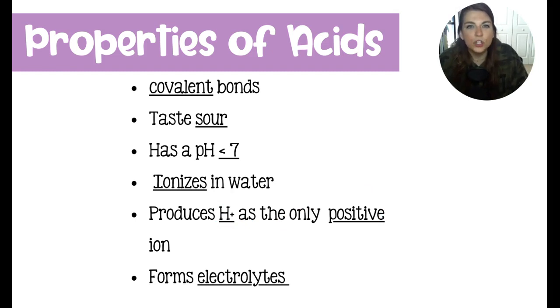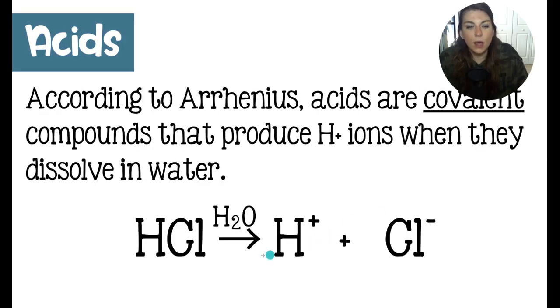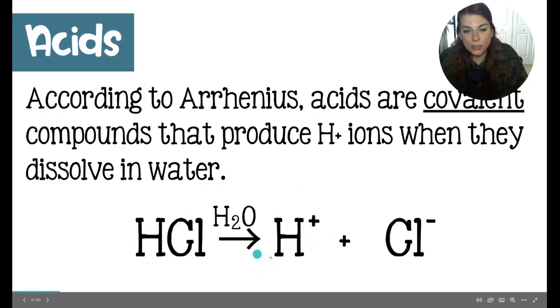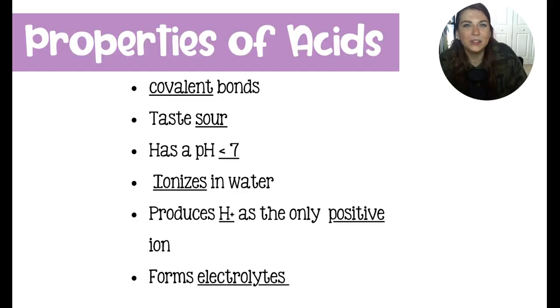Electrolytes, remember, are solutions that will conduct electricity due to the presence of mobile ions. So if we go back to this equation, we have hydrochloric acid. It breaks apart into hydrogen ions and chloride ions. And these are going to swim around in water. And they are going to allow an electrical charge to run through that solution. And that's what makes it an electrolyte. The same is true for bases. So based on properties and on chemical formulas, you should be able to distinguish acids and bases. That's the point of this lesson.